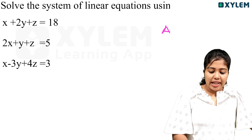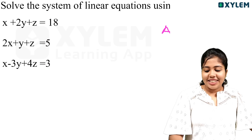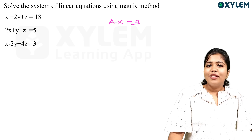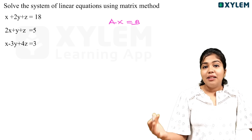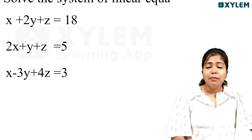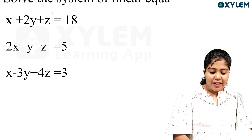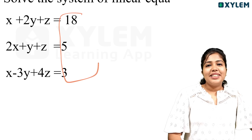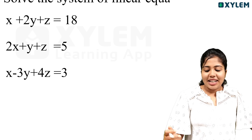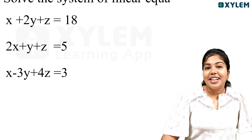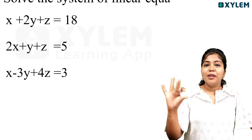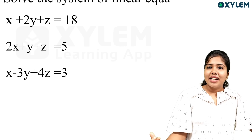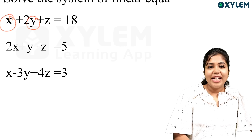There are three equations: 1, 2, 3. This is the AX equals B formula. This is x, y, z — this is matrix X. This matrix is A. This matrix is B. This matrix is unknown. There are three variables: x, y, z.